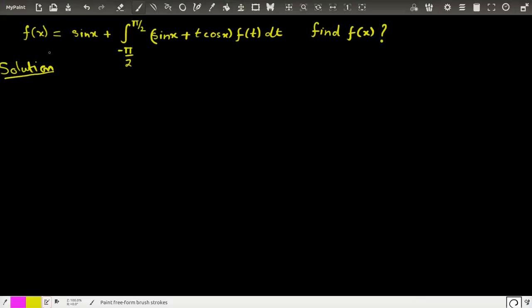Now this is a function f(x) which is sin(x) plus integration from minus π/2 to plus π/2 of the function, and again we have f(t) dt. Remember for this integration, t is a variable of integration, x would be a constant, and therefore all the functions of x would also be a constant.